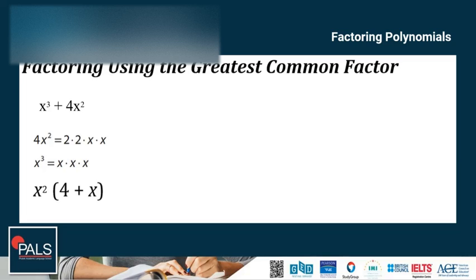In a way, factoring using the GCF is like undoing a distributive property problem. Let's try another example.